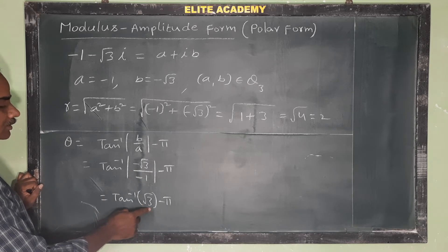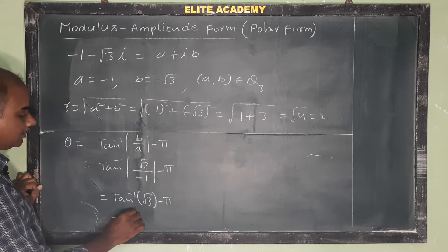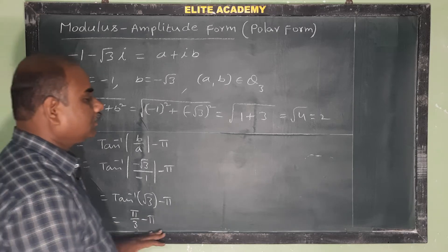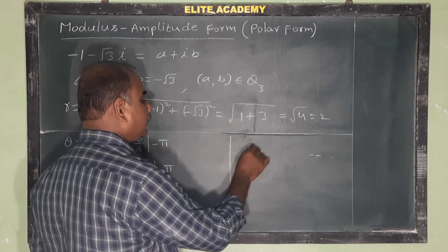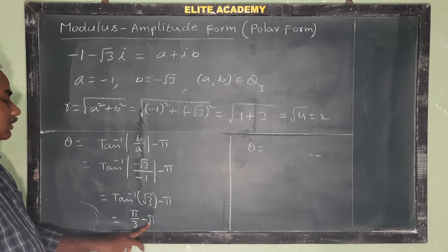tan⁻¹(√3) = 60° = π/3. Therefore θ = π/3 - π = (π - 3π)/3 = -2π/3.